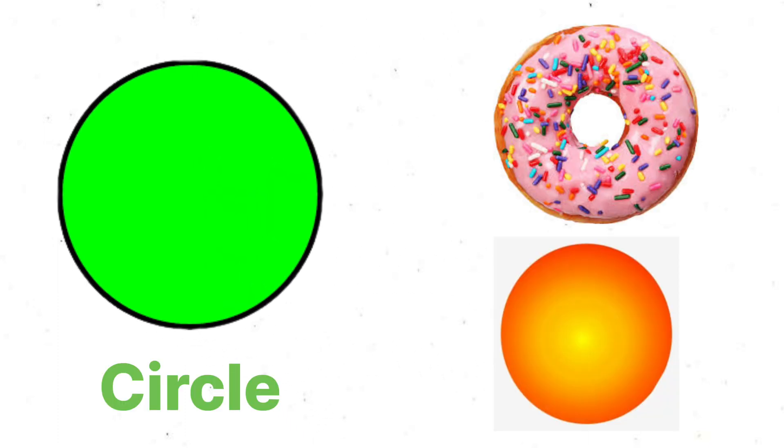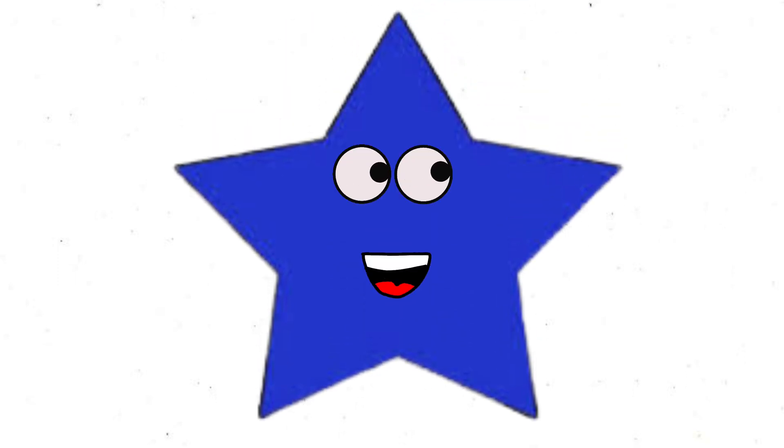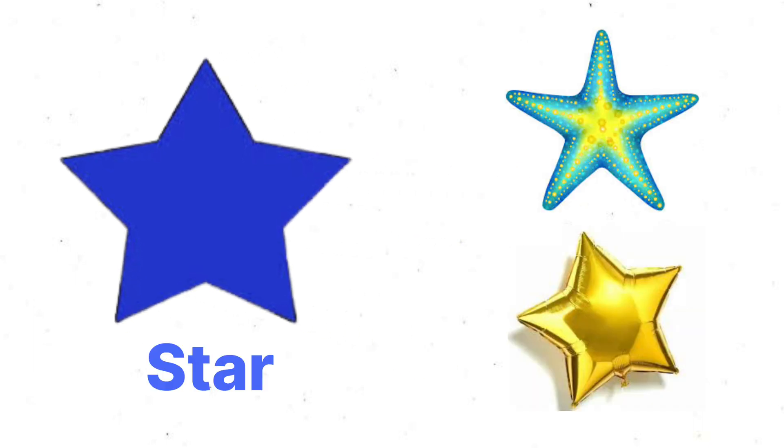Hi, I am a Circle and I am a round shape. The example of circle is donut and Sun. I am a Star and my shape is star shape. The example of star shape is starfish and star shape balloon.